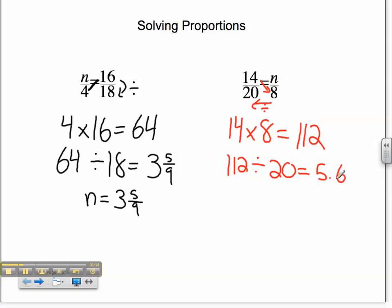which is the same as 5 and 3 fifths. My final answer is n equals 5 and 3 fifths. And this is how you solve proportions.